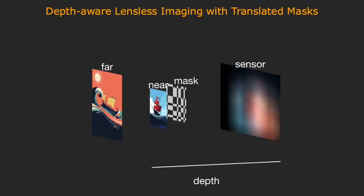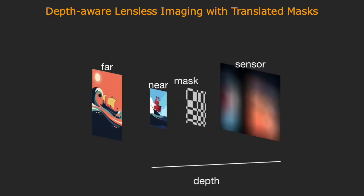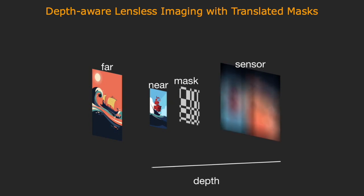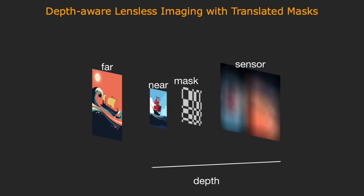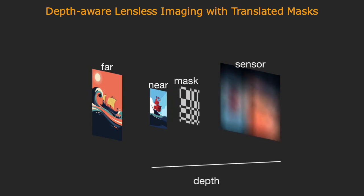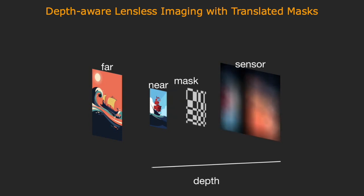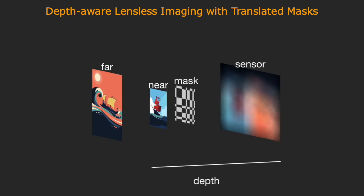To address the underdetermined reconstruction problem, we introduce programmable masks into lensless imagers to obtain more measurements. If we select the right masks, we have a well-conditioned system with a large number of unknowns and measurements.